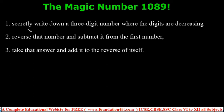First, secretly write down a three-digit number where the digits are decreasing in order. For example, 851. This is a three-digit number where the digits are decreasing in order.